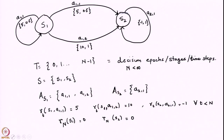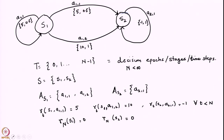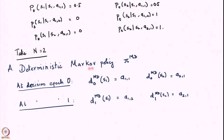Welcome everyone. In the previous lecture we had seen a problem which involved a system that could be in two possible states, S1 and S2, and there were certain actions available at each of these states. We designed policies of both deterministic as well as randomized kinds that were Markov. Here was our deterministic Markov policy and policies that were also history dependent.